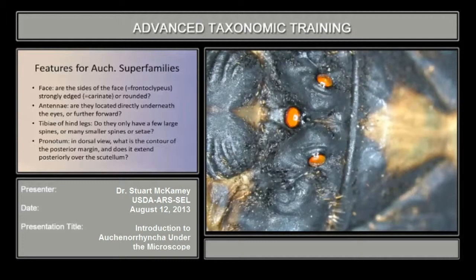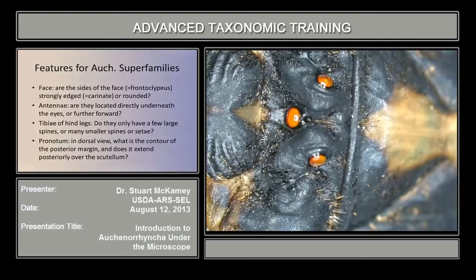Before we cover some of the other families, I just want to give an example of a cicada. No matter what the size or color, they all pretty much look like cicadas. And if you have any doubt, you can count the ocelli, because they always have three. The other superfamilies only have zero to two.